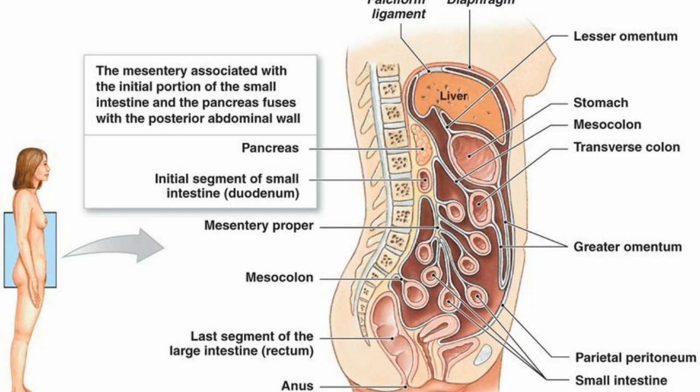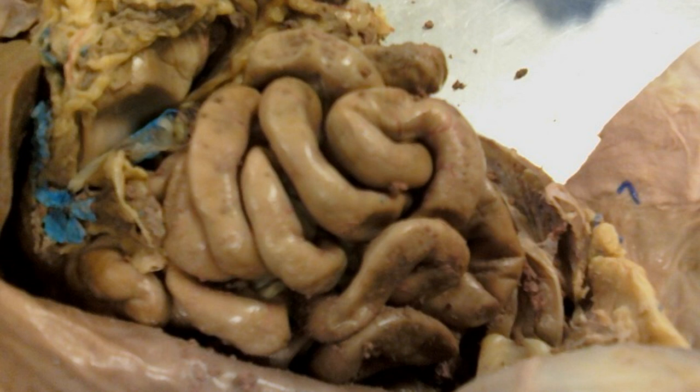Jejunum and delium lie in the middle of the abdominal cavity, framed by the large intestine. There is no such natural line of separation to distinguish jejunum and delium.